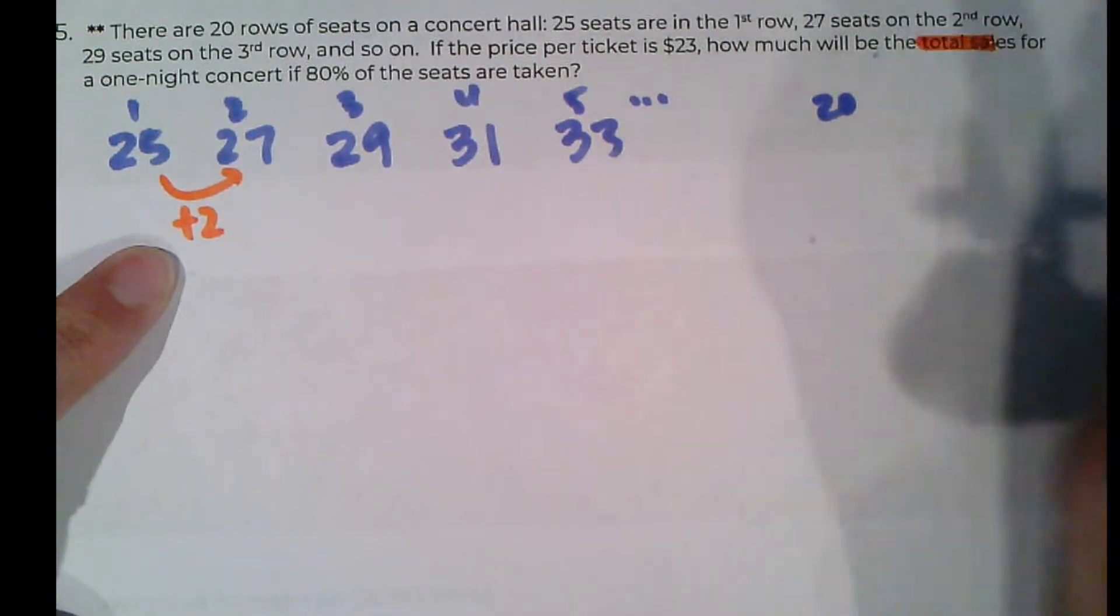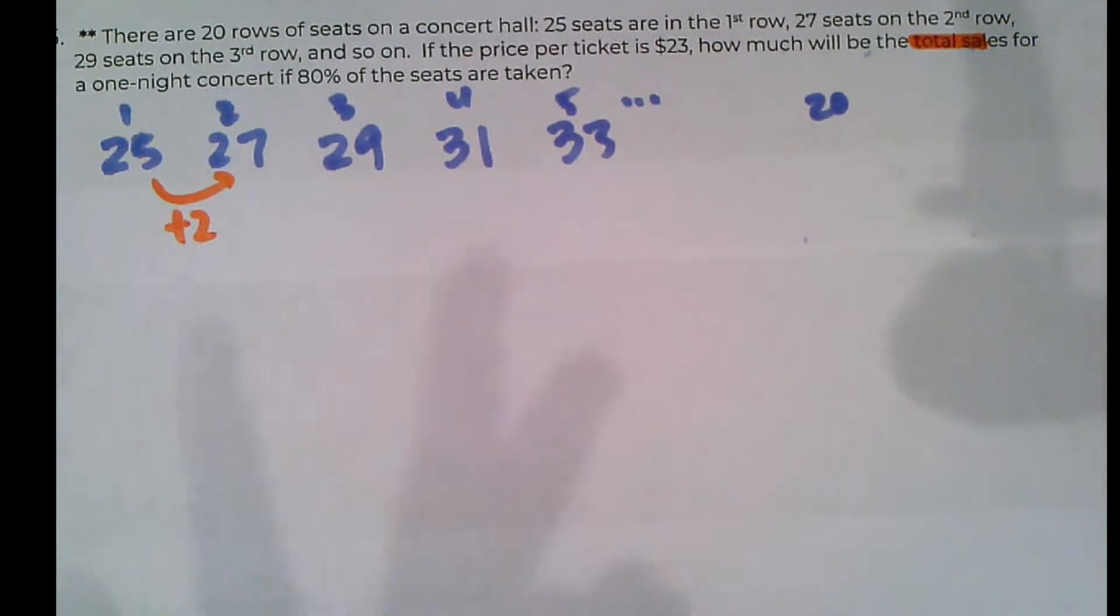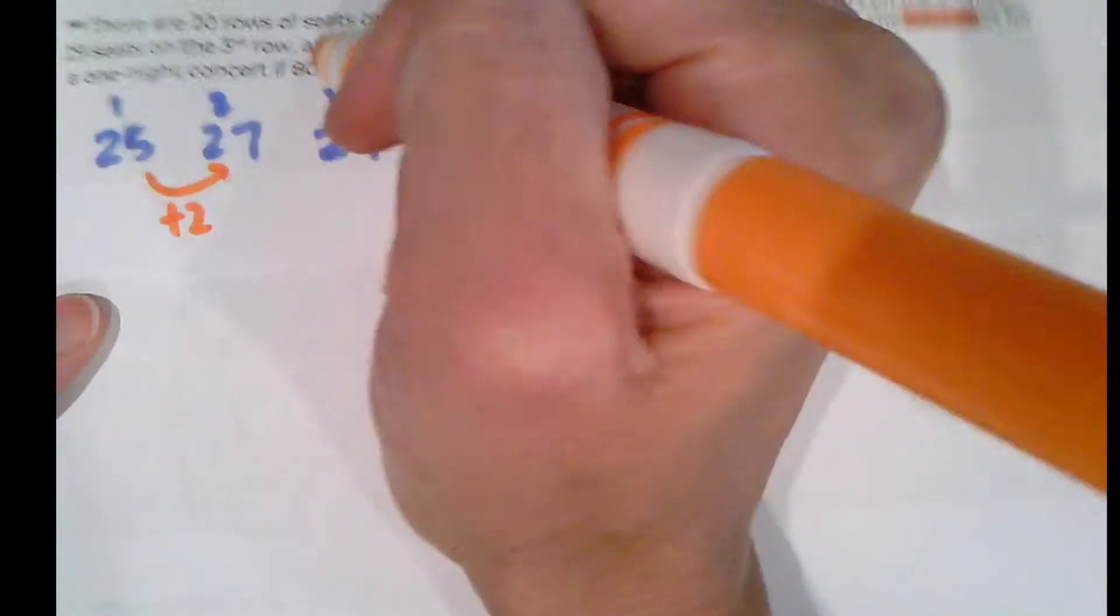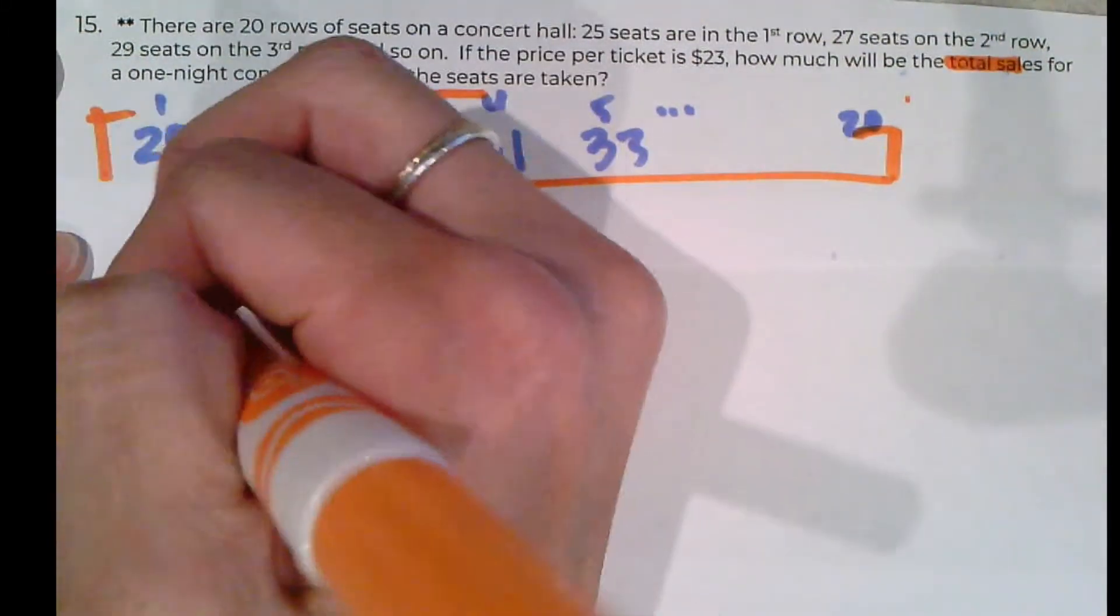We've got a nice little hint of total because we want to figure out how many total sales there are. So we need to figure out how many seats were sold. If they sold 80% of the seats, then we need to know how many total seats there are. So we need to add up all of this stuff. That's our goal. So we need to do an SN for an arithmetic.